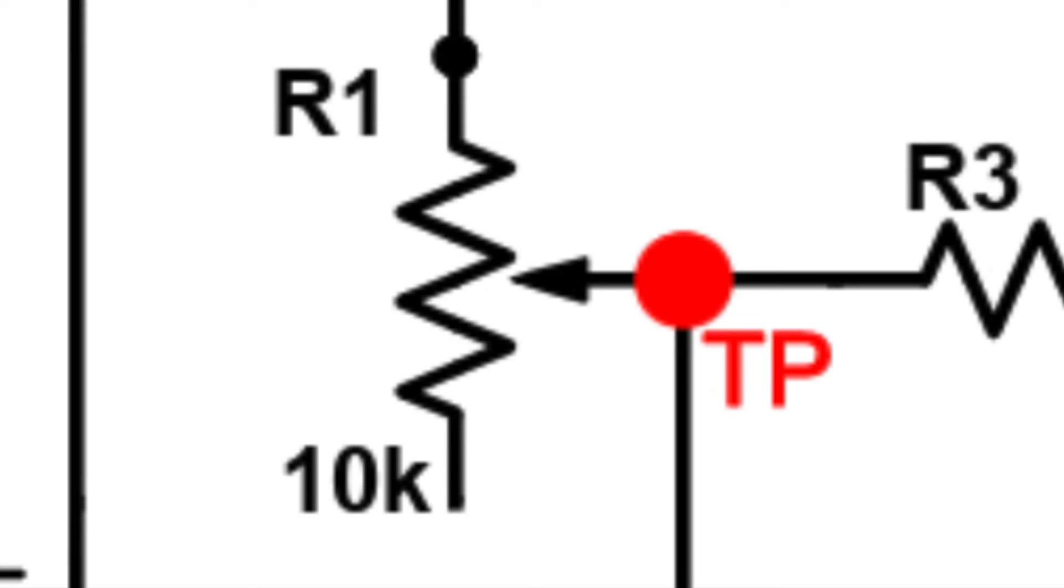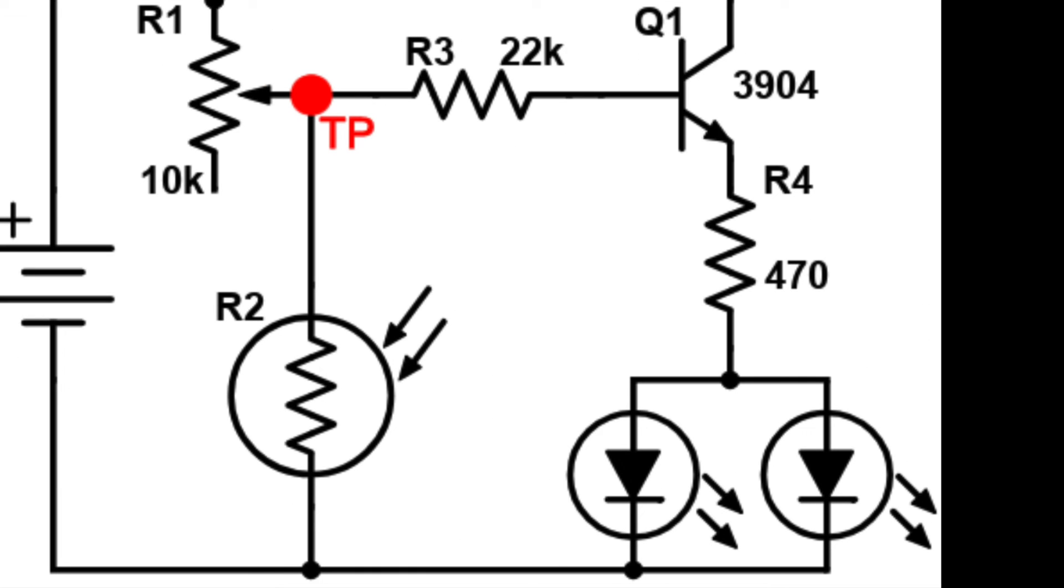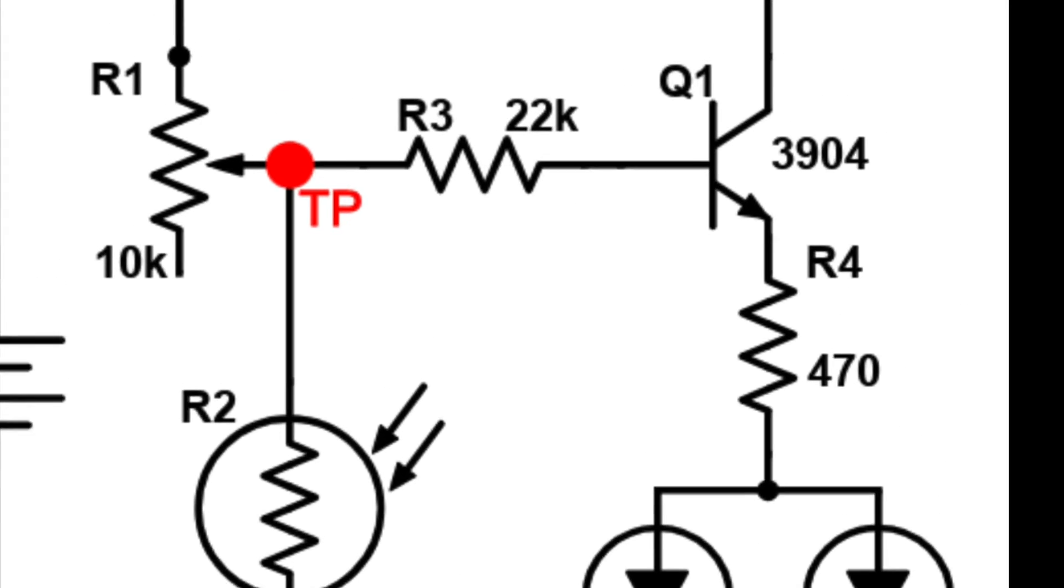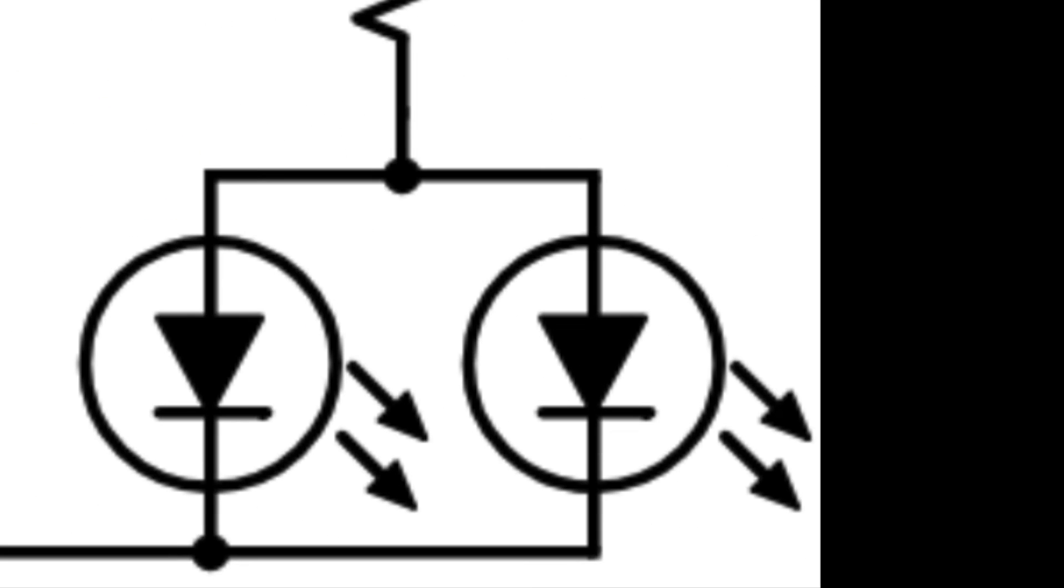However, if the test point has voltage, the current goes through the path of least resistance. The resistance in R2 is greater than the resistance in R3. The circuit's power is put into the transistor as a switch, activating the LEDs.